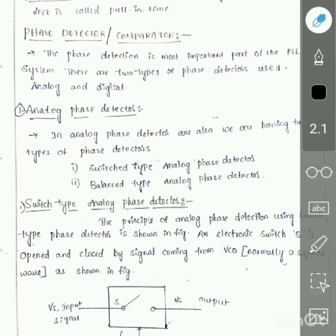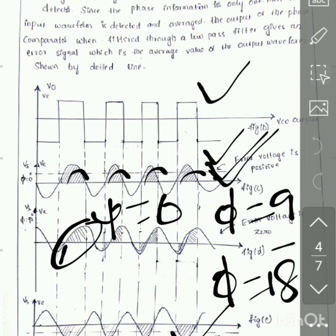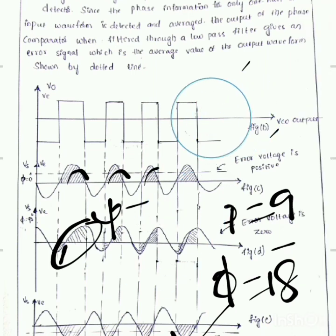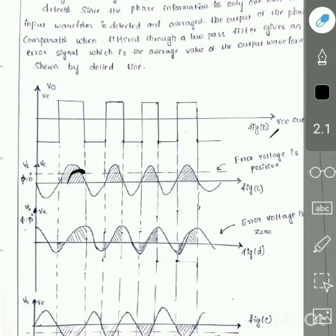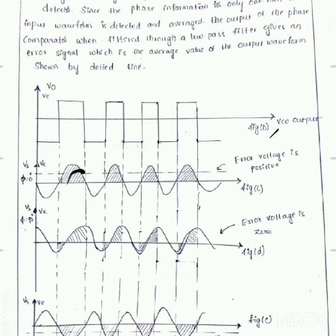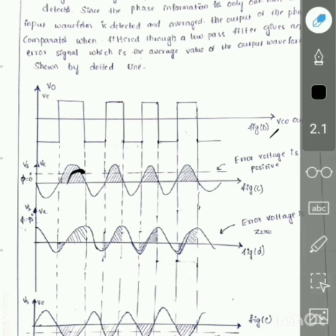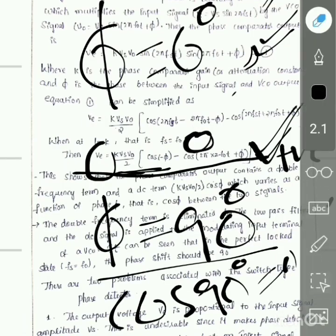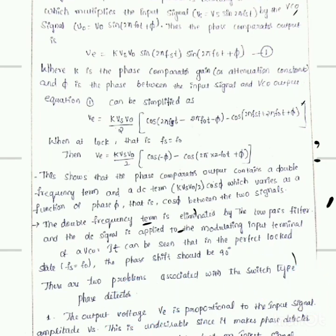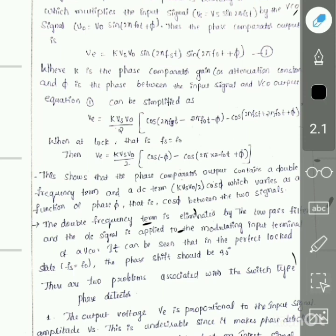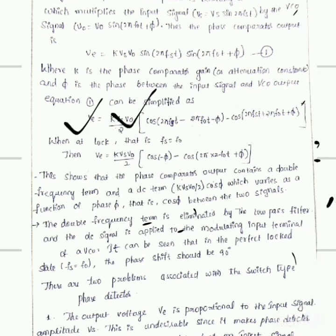The switch type phase detector has two drawbacks. First, the output error value does not directly depend on φ — it depends on cos(φ). This makes the circuit non-linear because the error depends on cos(φ) rather than directly on φ. Second, if you observe the output equation, Ve = K·Vs·V0/2, meaning the error also depends on the amplitude of the input signal Vs. If you want to reduce the error you may unintentionally change the input amplitude. This amplitude dependence is another disadvantage of the switch type analog phase detector.